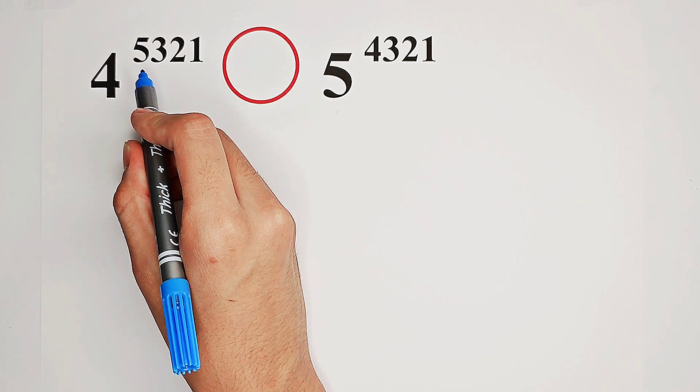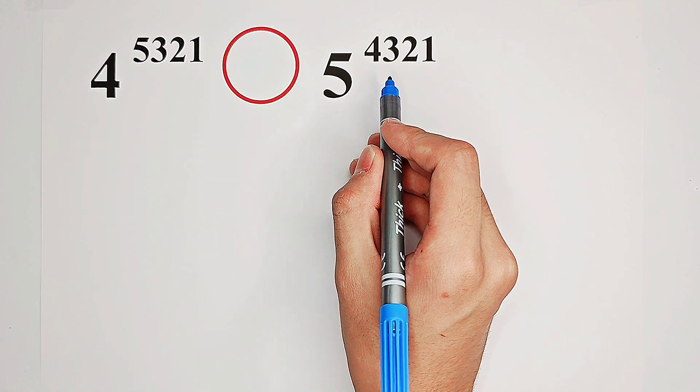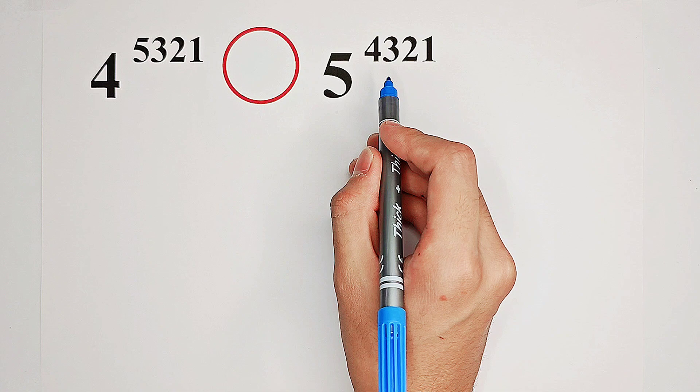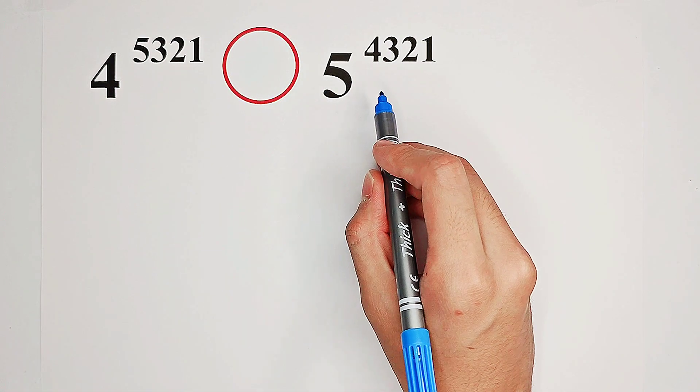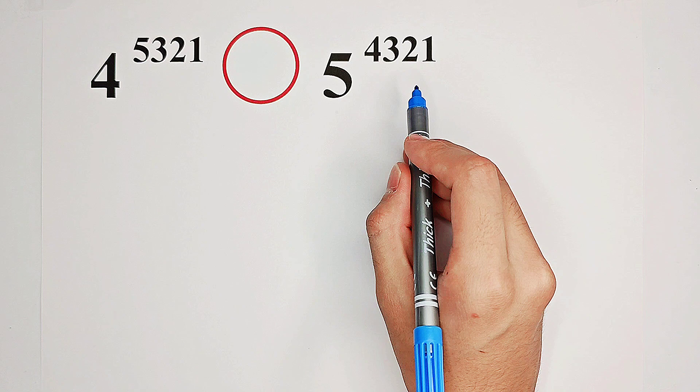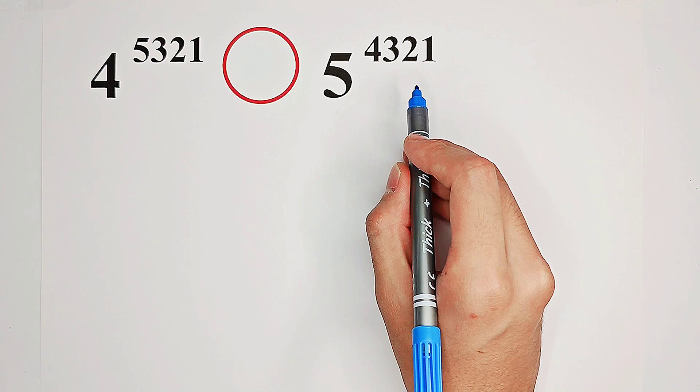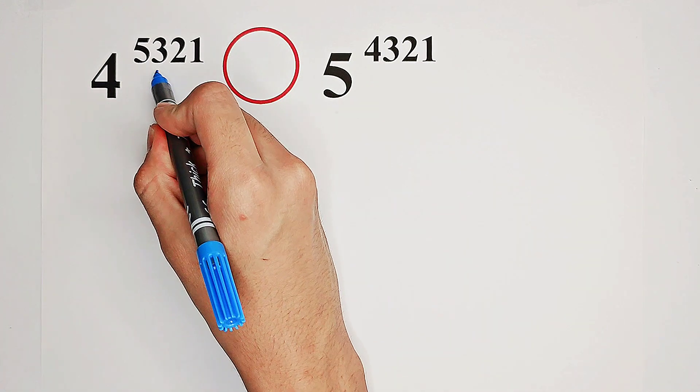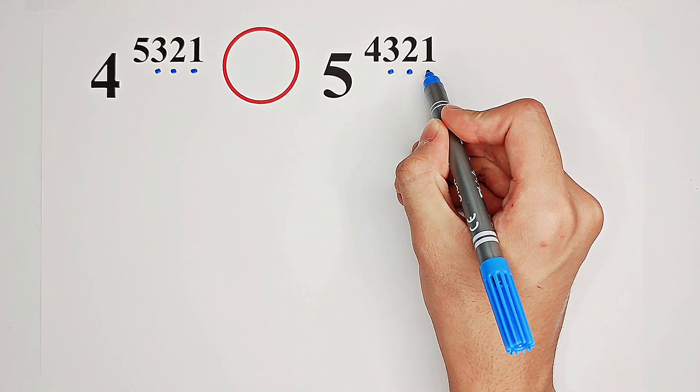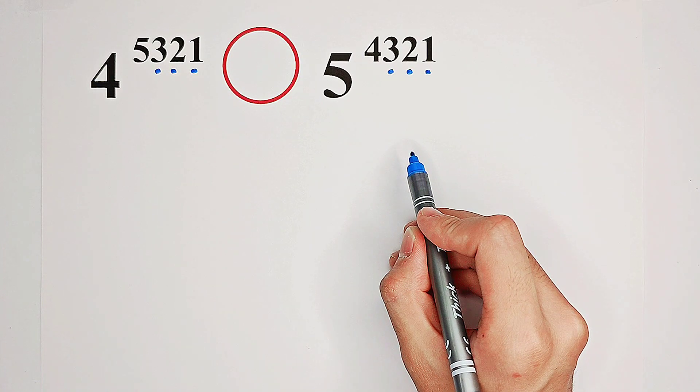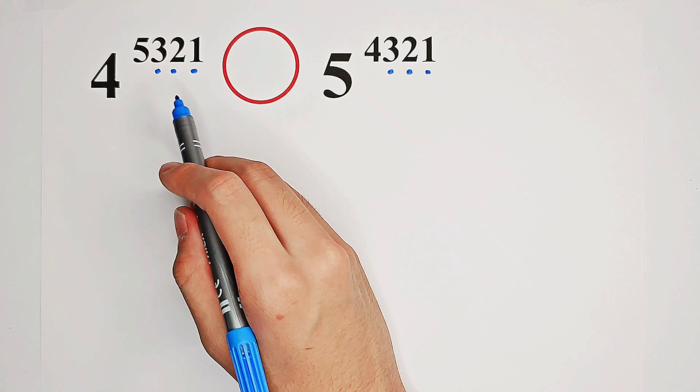Firstly, notice that their exponents are very nice. 5,321, 4,321. So they just differ from 1,000. That means their last three digits are the same, 3, 2, 1.